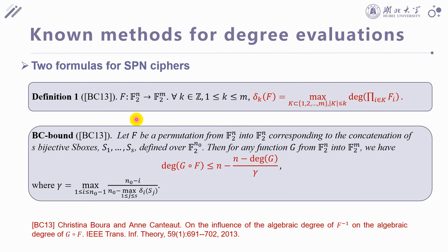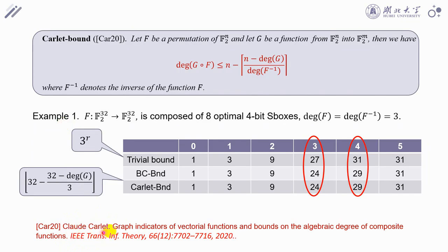There are four effective long-tight methods to estimate algebraic degree. First, for the SPN method ciphers, there are two formula-based bounds. One is proposed by Bola and Candid, we call it BC bound. Another is proposed by Carlit, we call it Carlit bound.